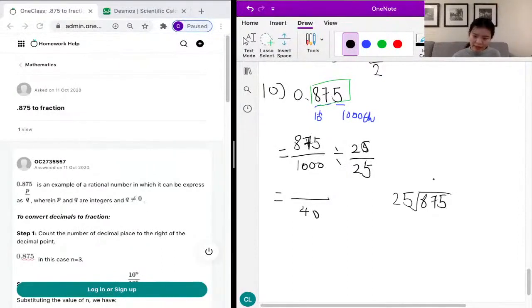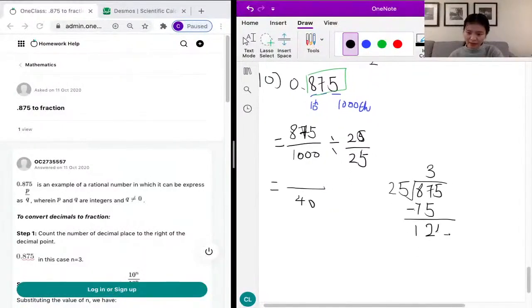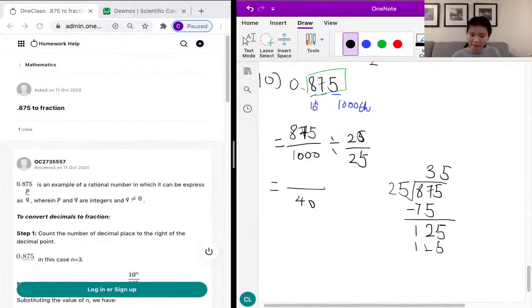So, 875 over 25, we know that 87 over 25 is 3, and that will make 75. And our remainder would be 12, and we drop the 5. So, 5 times 25 equals 125, and 125 minus 125 would be equal to 0, and that completes our long division.